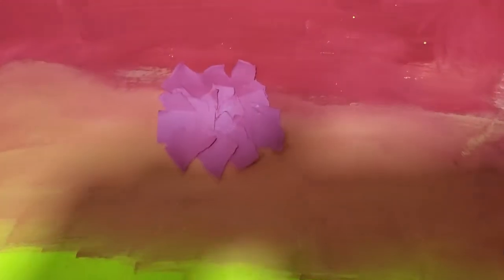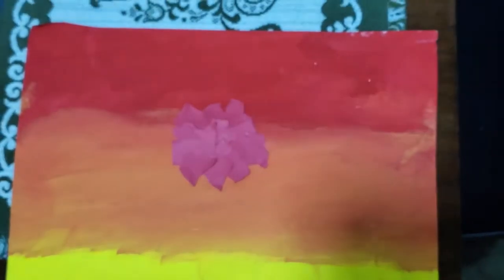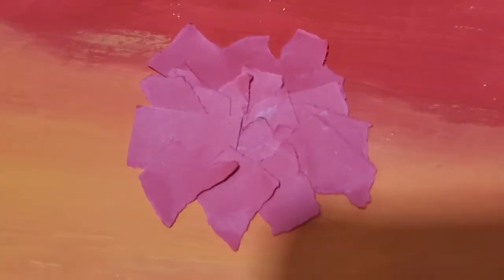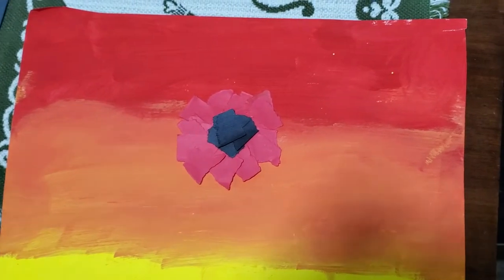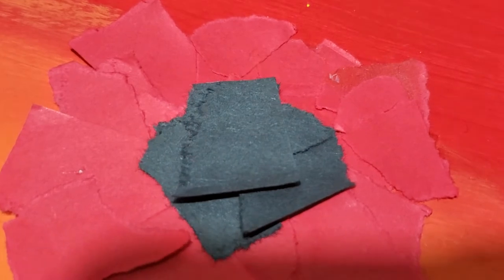First, you're gonna glue your red petals for the poppy right in the middle of your sunset, just like this, one by one. Then you're gonna glue your small black pieces of construction paper.